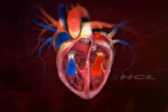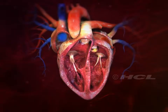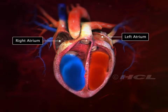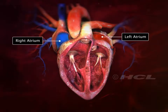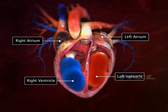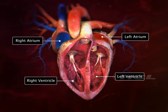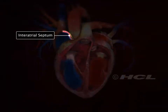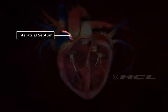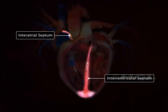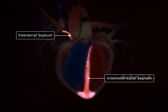The human heart has four chambers. The two upper chambers are the atria and the two lower chambers are the ventricles. The inter-atrial septum separates the two atria, and the inter-ventricular septum is the partition between the two ventricles.